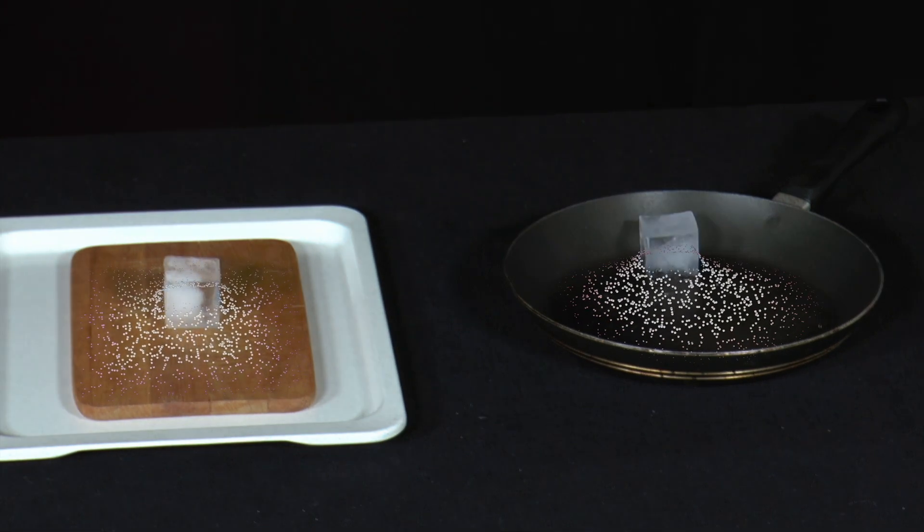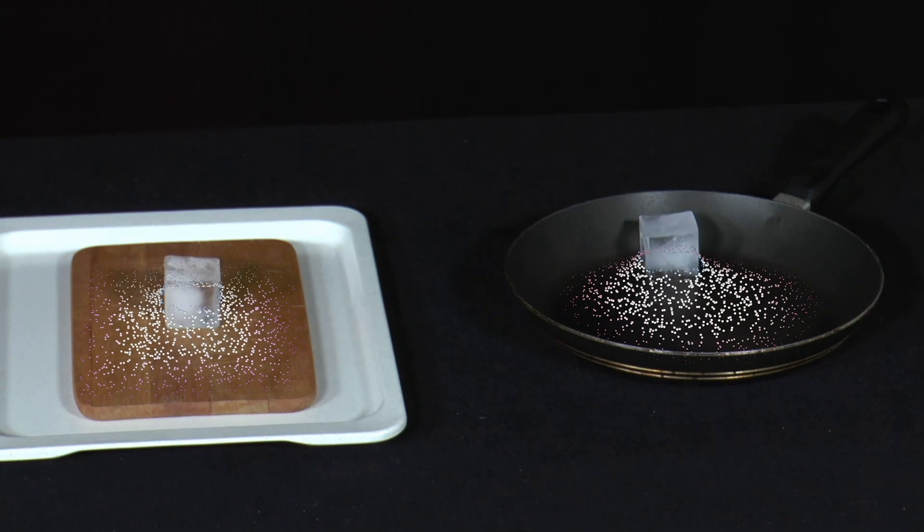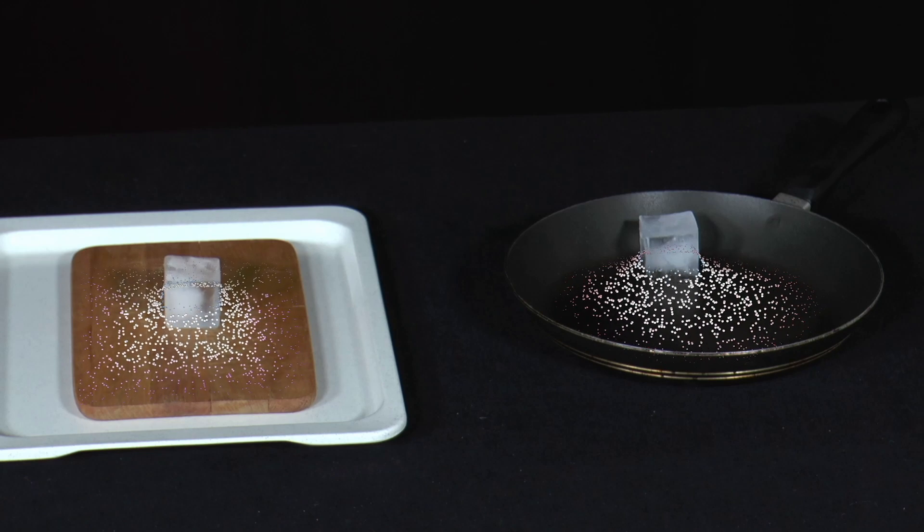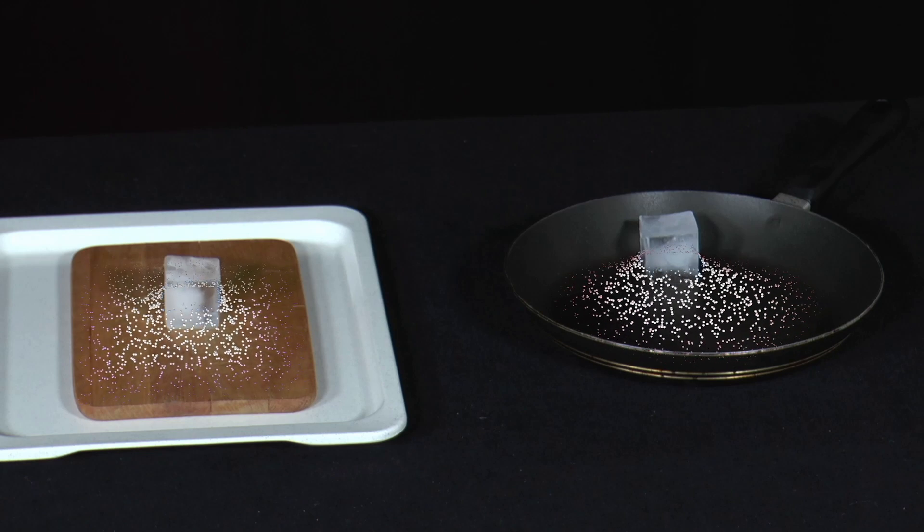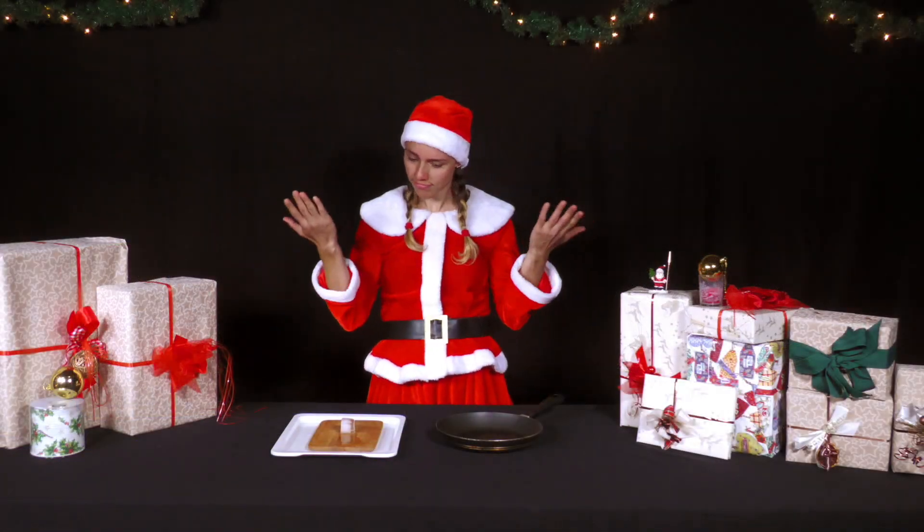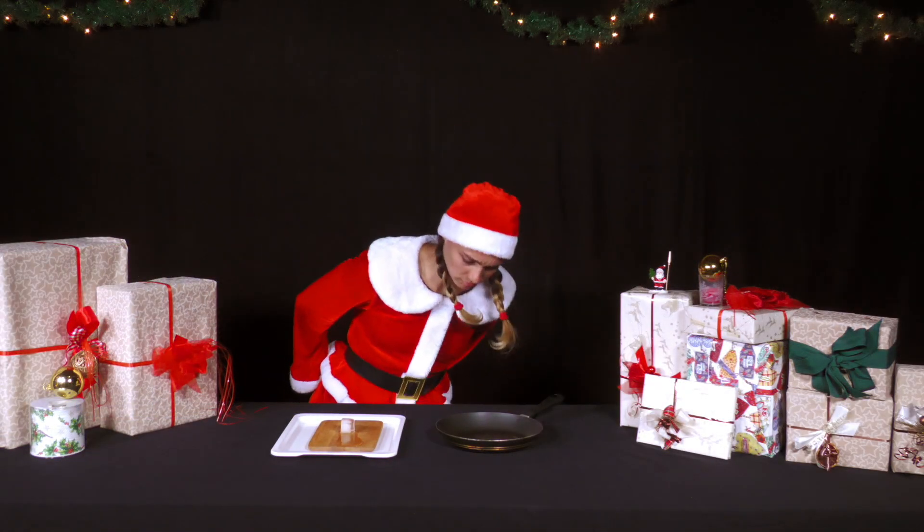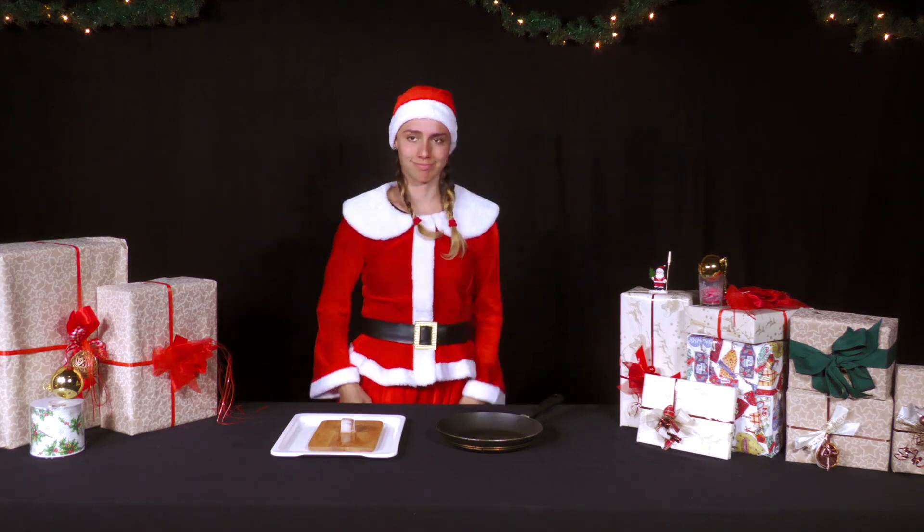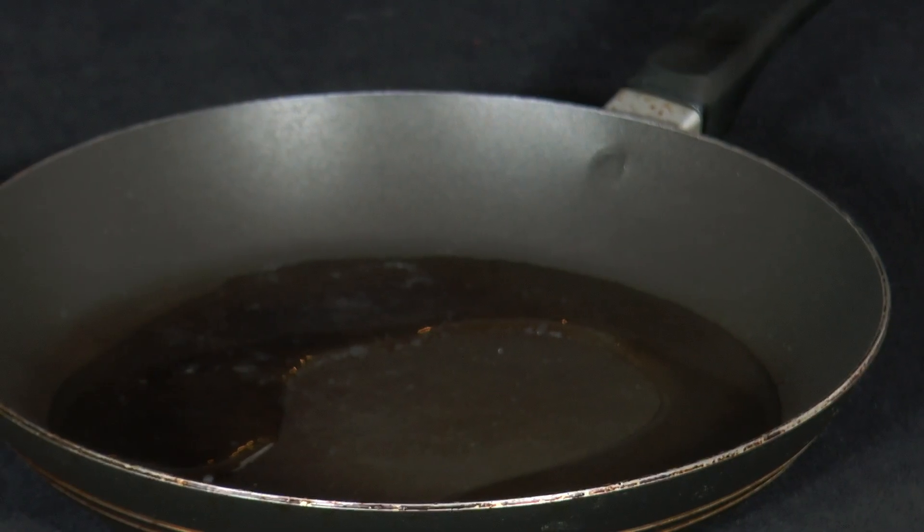The material of the pan transports both this local cooling from the ice cube to the whole of the pan and the heat from the whole pan to the ice cube, so that there is a temperature balance. As a result, a lot of heat energy from the pan as a whole flows into the ice cube so that it melts quickly.